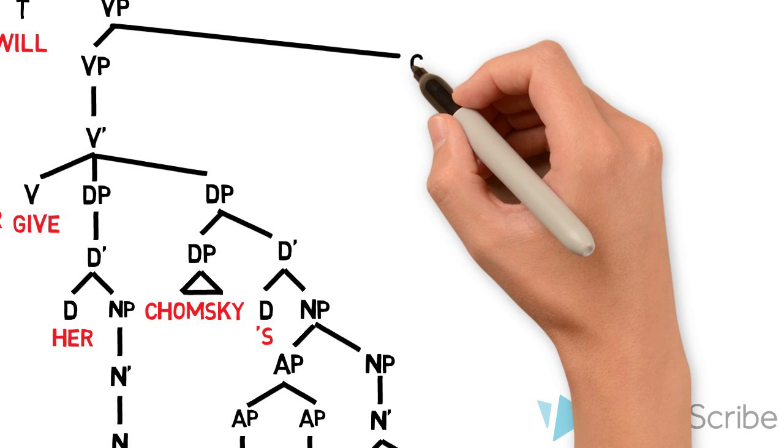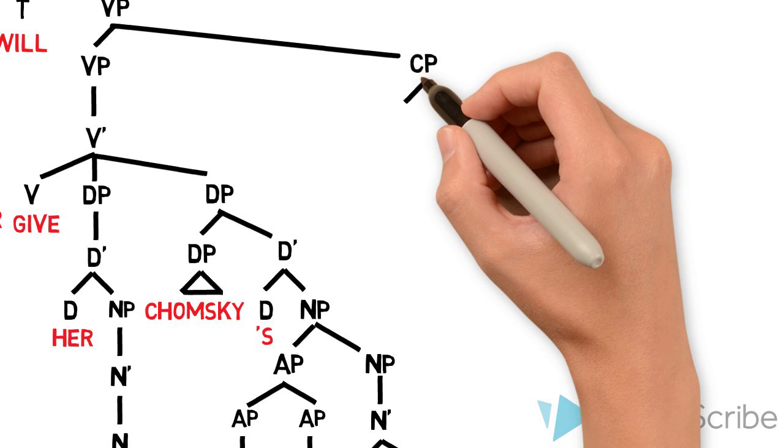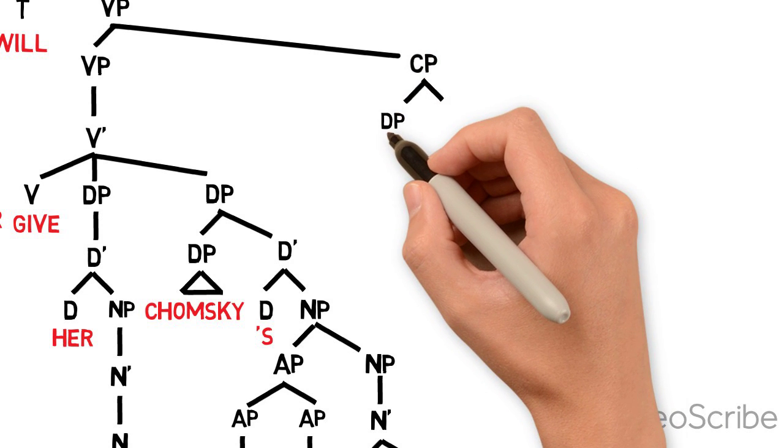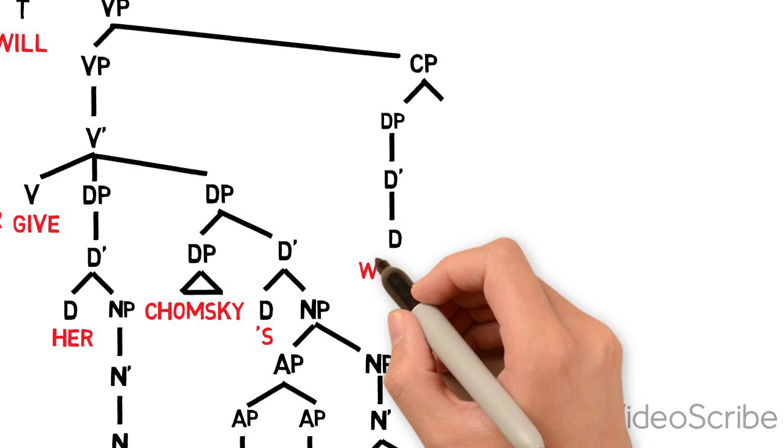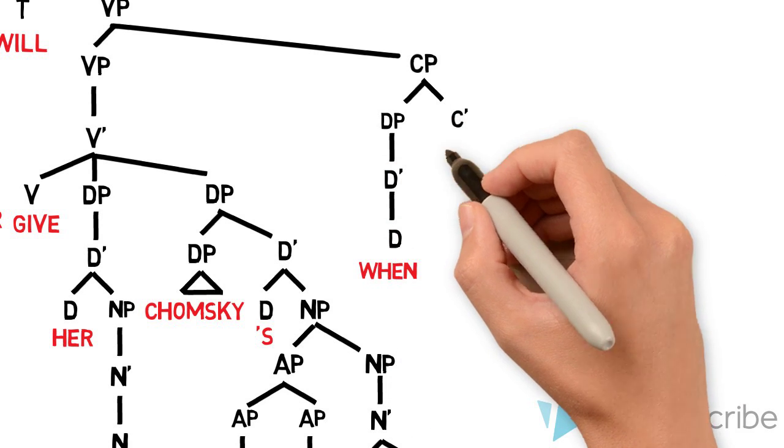Finally, we can start to draw out the tree structure for our adjunct when she can. The adjunct will consist of a CP with a DP, the WH word when, as its specifier.